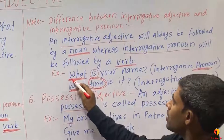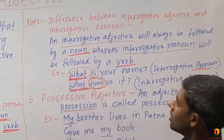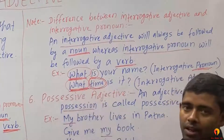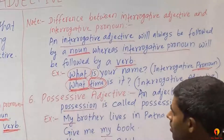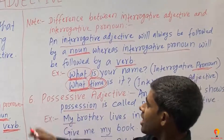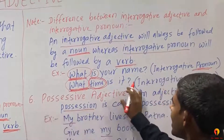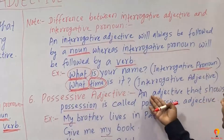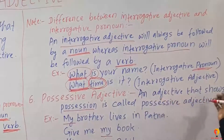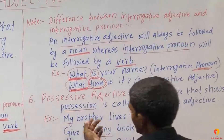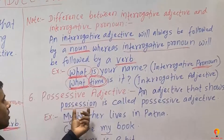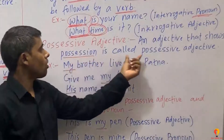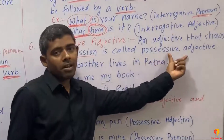So if what follows is a noun, it is an Interrogative Adjective; if what follows is a verb with no noun, then it is an Interrogative Pronoun. The next type is Possessive Adjective. An adjective that shows possession is called a Possessive Adjective.